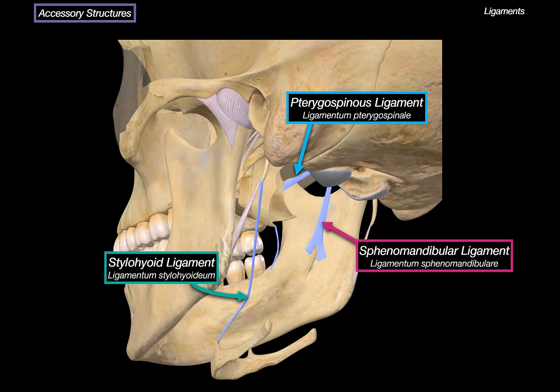The sphenomandibular ligament connects the spine of the sphenoid bone to the lingula of the mandible. It doesn't limit much motion, but provides passive support to the mandible, especially during opening of the jaw.